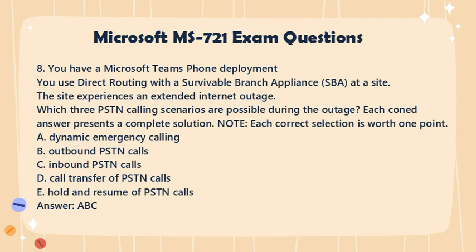Question 8. You have a Microsoft Teams phone deployment. You use direct routing with a survivable branch appliance (SBA) at a site. The site experiences an extended internet outage. Which three PSTN calling scenarios are possible during the outage? Each correct answer presents a complete solution. Note: each correct selection is worth one point. a. Dynamic Emergency Calling. b. Outbound PSTN Calls. c. Inbound PSTN Calls. d. Call Transfer of PSTN Calls. e. Hold and Resume of PSTN Calls. Answer: a, b, c.